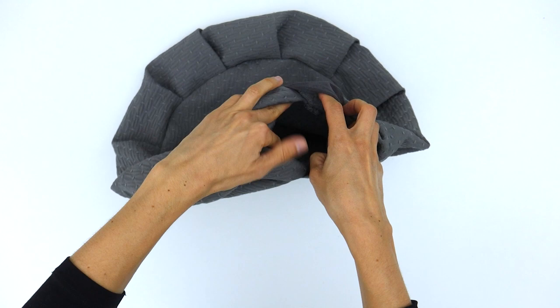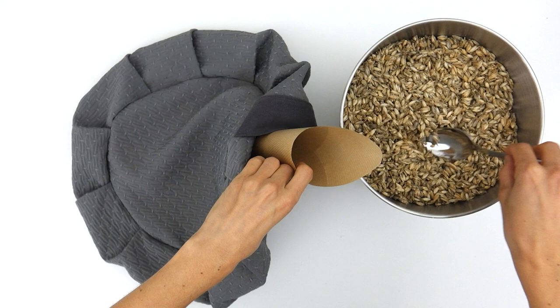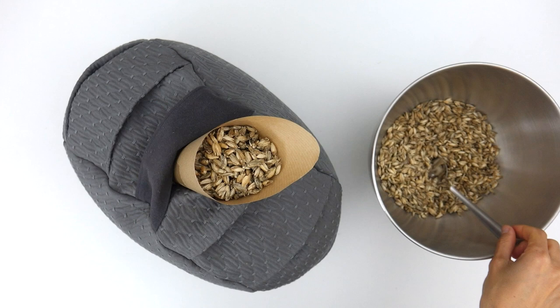It will need to be filled with the filling of your choice: old scraps of fabric, kapok, or like I chose for this tutorial, organic spelt. Be generous if you want a firm and comfortable cushion, and don't hesitate to finish force feeding the beast with a spoon.